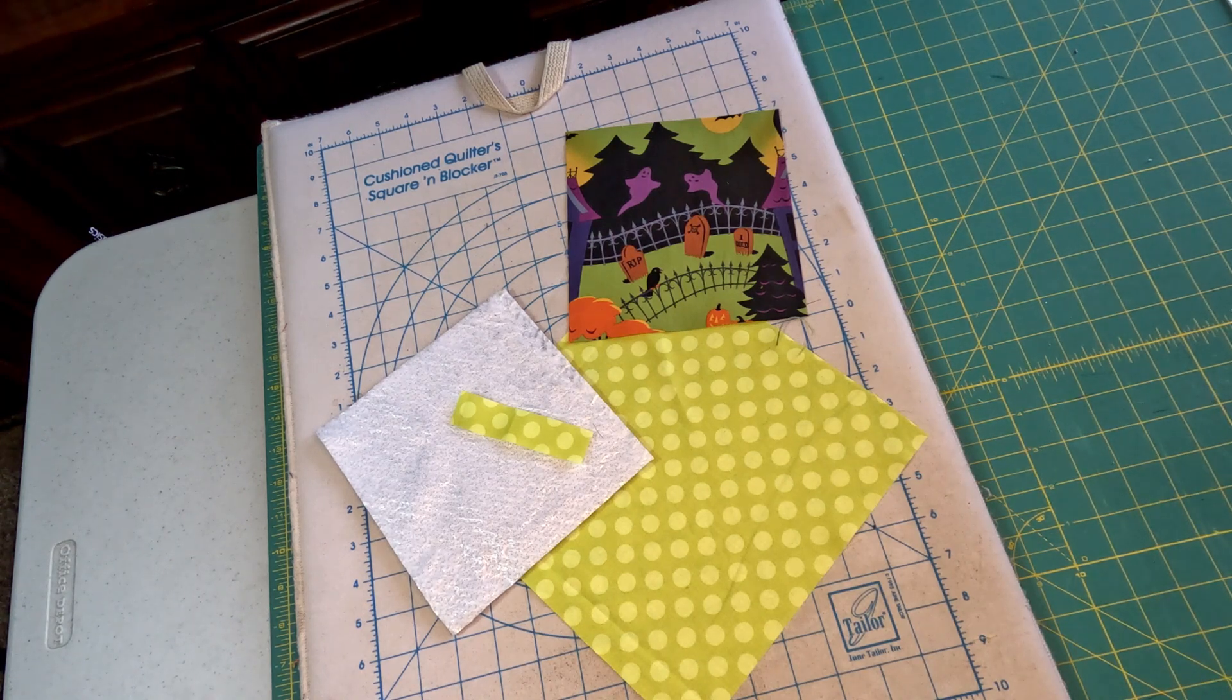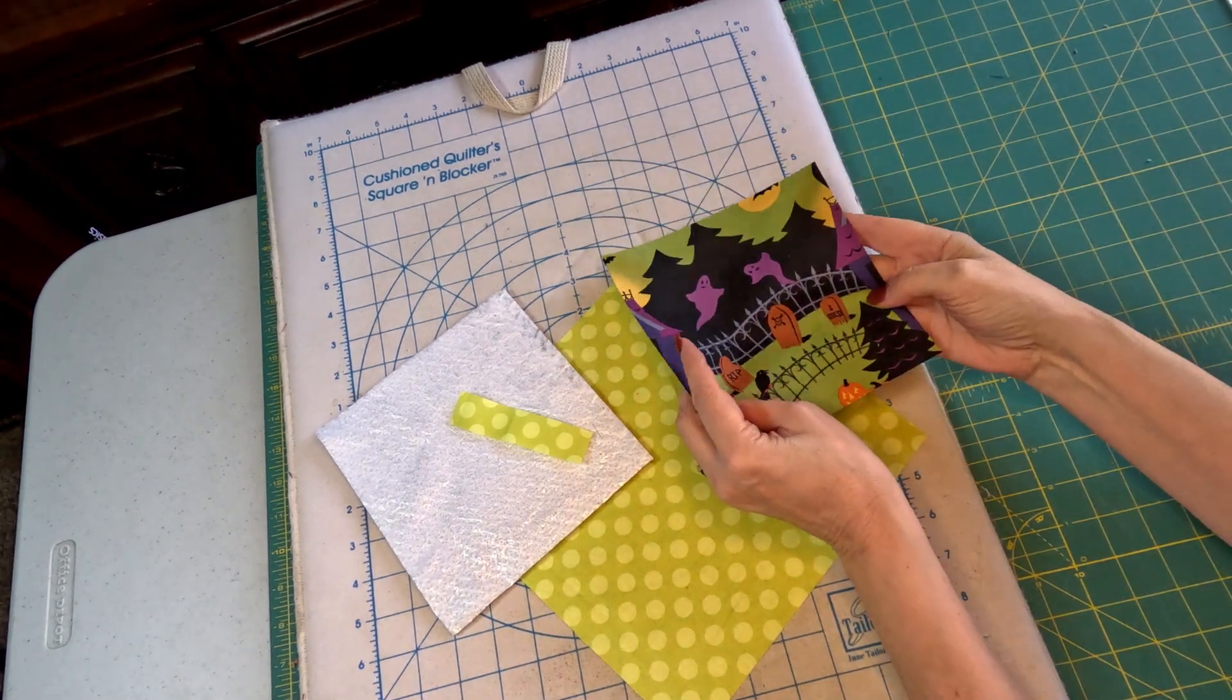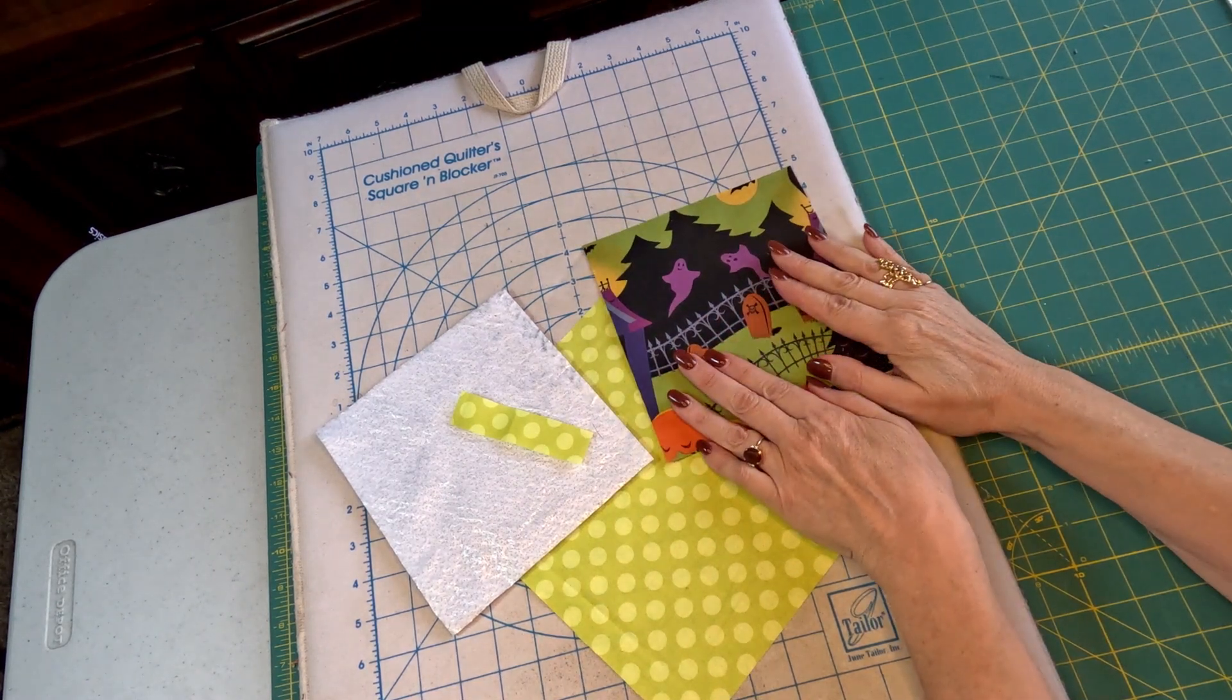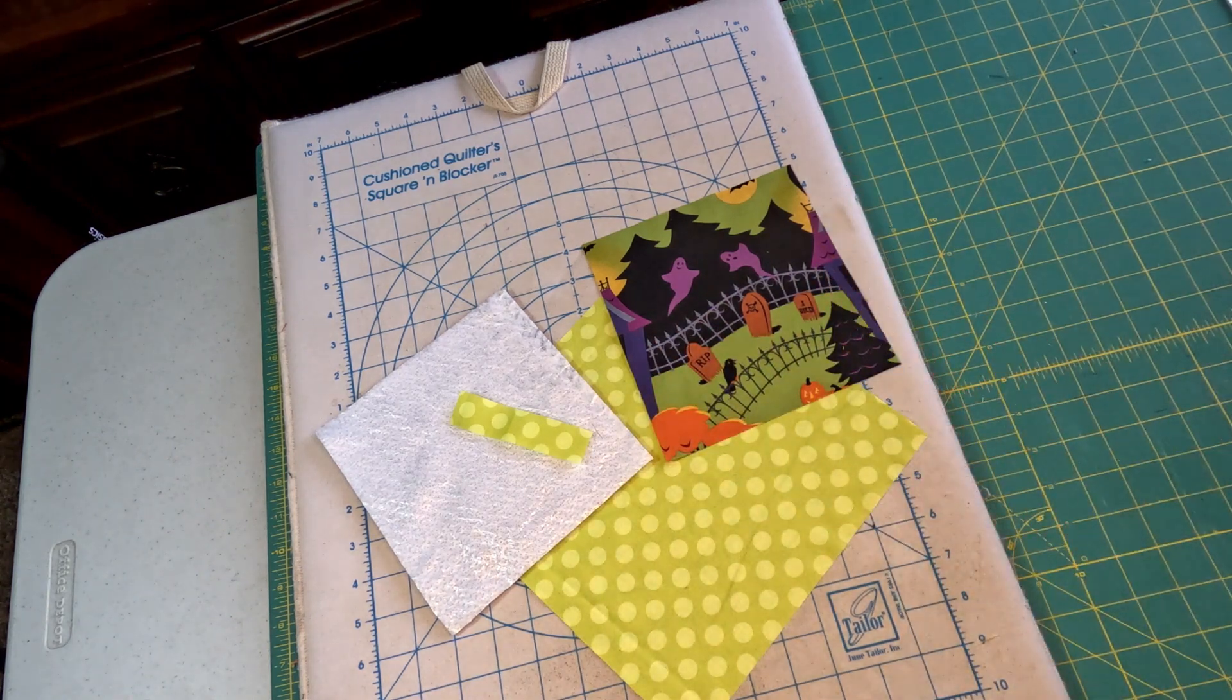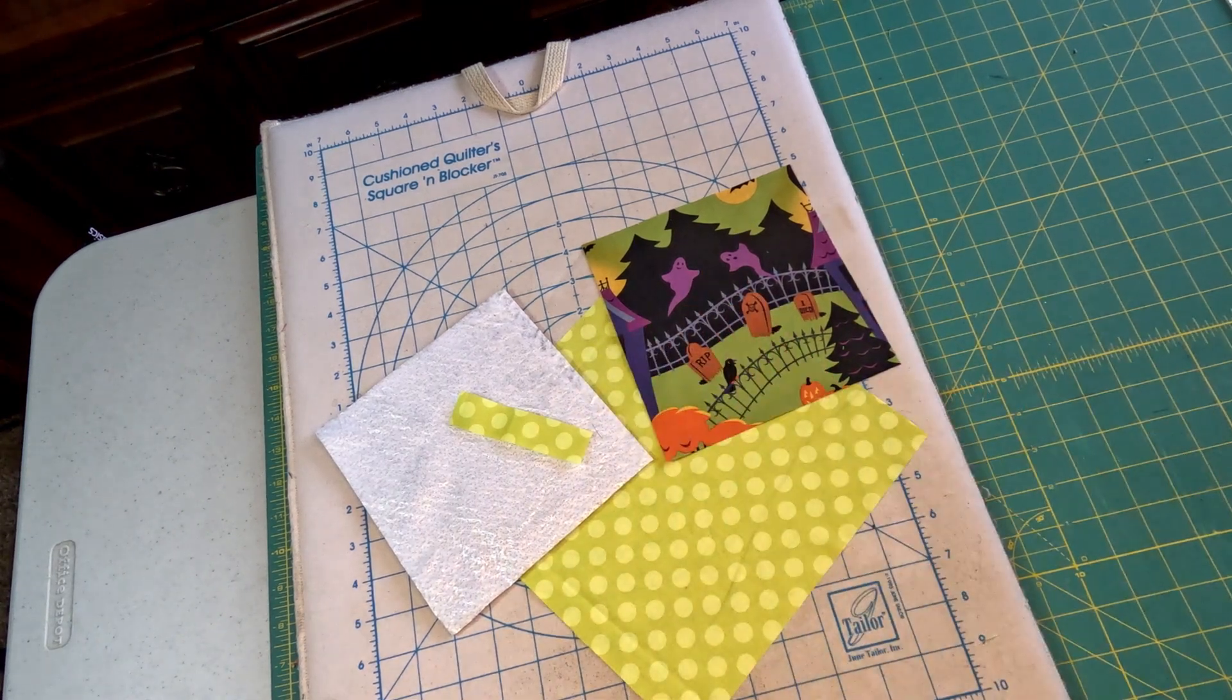For this type of potholder, we want to fussy cut our front of it. Fussy cut just means that you cut out the fabric intentionally to frame your picture in the center of it.